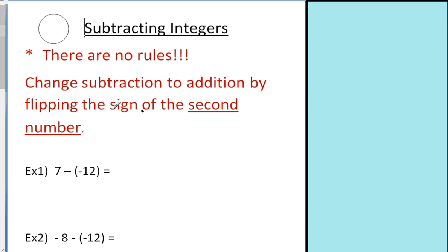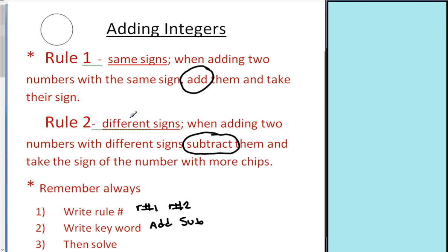For subtraction, as a teacher, you have many options of how to teach this. You could either start with the addition rules, and then go to the subtraction rules, but I don't tend to like to teach it that way. Here's the deal: if I had 3 minus 2, this is positive and this is positive — is that rule number 1 or rule number 2? Most people would say they're the same color, so it's rule number 1, but rule number 1 says 'when adding two numbers,' and we're not adding there.